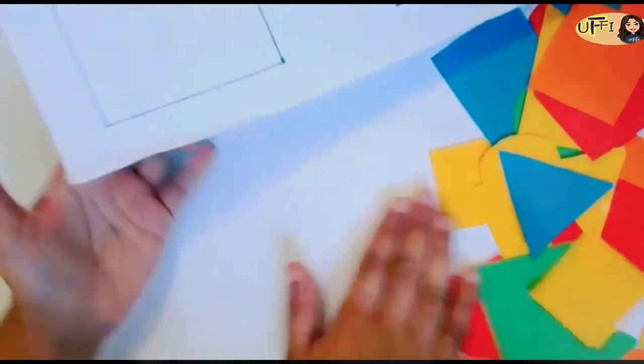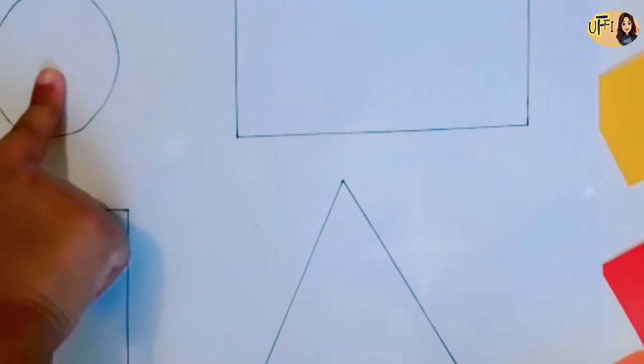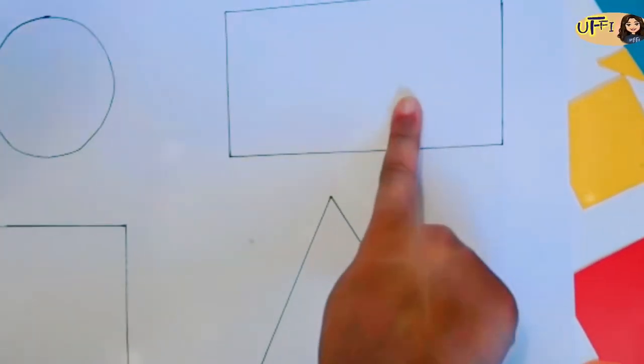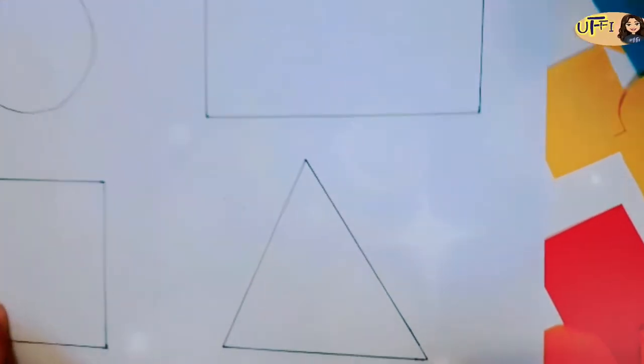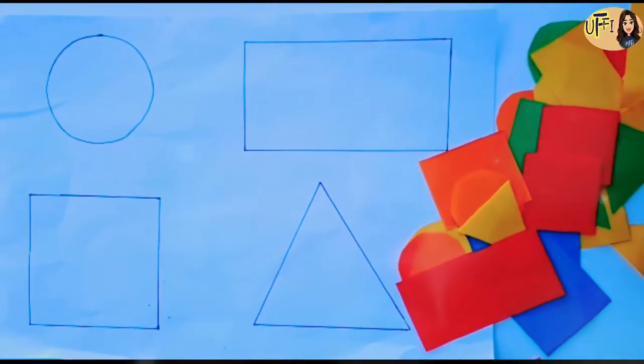Okay, take this. I will make it. Okay, what shapes names? A circle. Circle shape, very good. A rectangle shape. Very good. A square shape. Nice, very good. And a triangle shape. Very good.